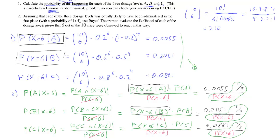Since it was equally likely that any of the three doses was administered, and we observed six mice showing regression, we conclude it is most likely that dosage B was administered — it has the highest probability — followed by C second and A third. We can read this directly from the binomial probabilities only because the doses were equally likely a priori; if they weren't, the prior probabilities would matter and the ranking could change.